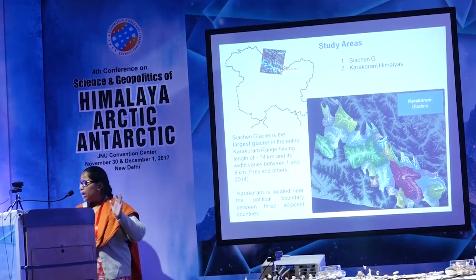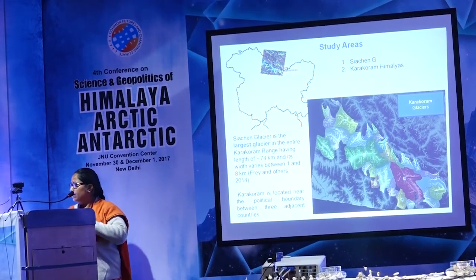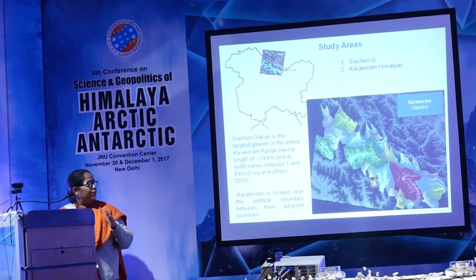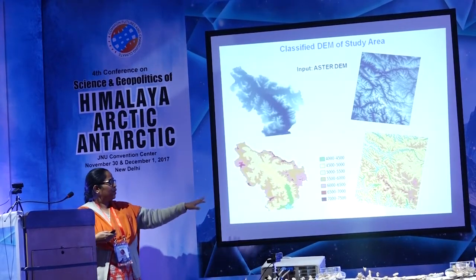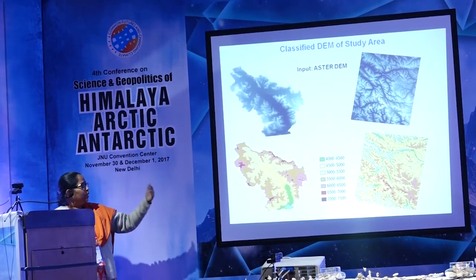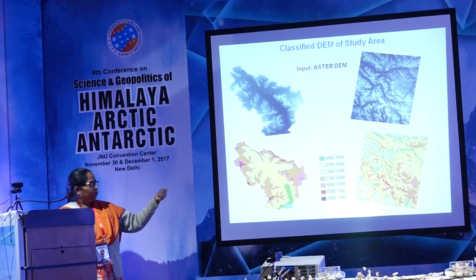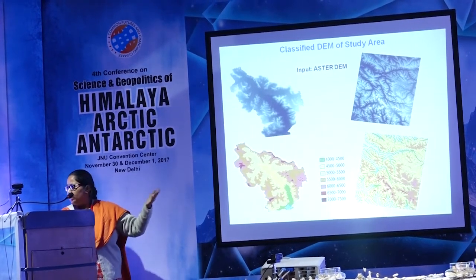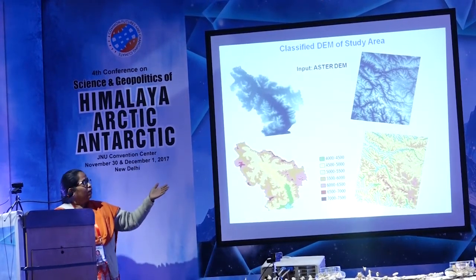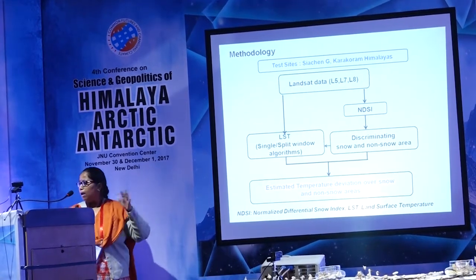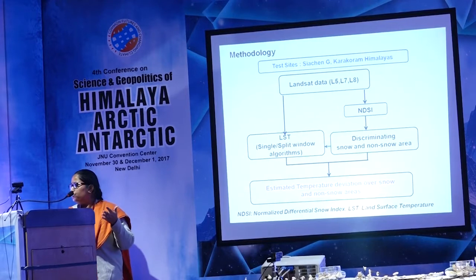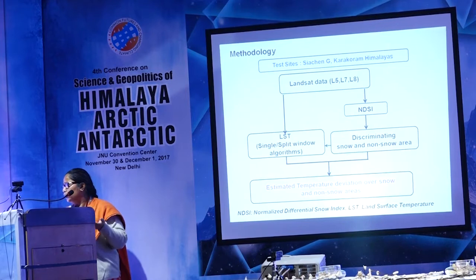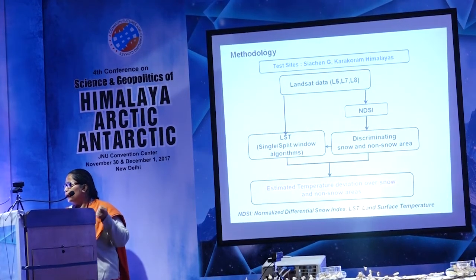First I studied the Siachen alone, and then I extended the research to include the whole Karakoram to see how both regions are behaving differently. The DEM is classified — we can see that Siachen goes up to heights of more than 7,500 meters, and the Karakoram is slightly more than 1,000 meters higher than Siachen. For methodology, I downloaded Landsat data from the USGS site and used the split-window and single-window algorithms for L5, L7, and L8 data to calculate LST.